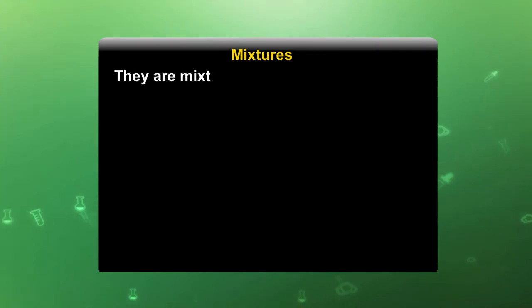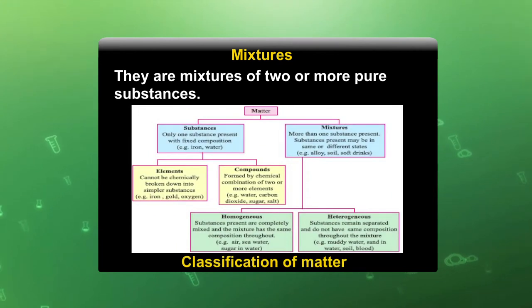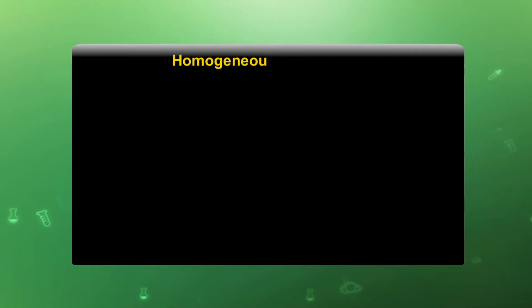Mixtures are made of two or more pure substances. This diagram shows the classification of matter into different substances. In the case of elements there is only one kind of atom. In compounds, two or more different kinds of atoms are joined together. In mixtures, different types of molecules are randomly distributed. An example we observe every day is making glucose water or nimbu pani — this type of mixture is a homogeneous mixture.